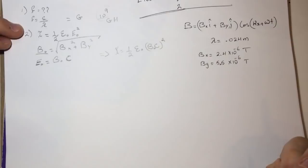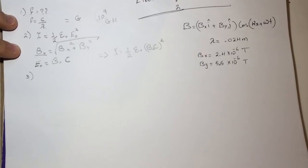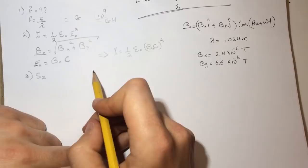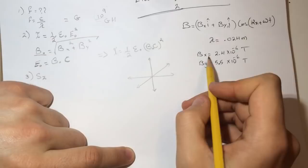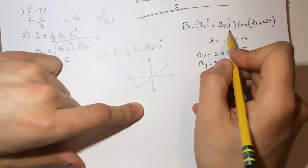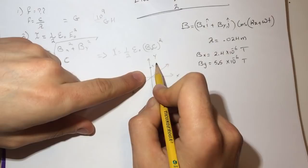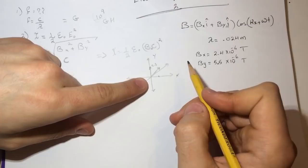So the intensity will look like this: I equals half epsilon-naught times B-naught times c, times c squared. Now question three is asking what is Sz, the z-component of the Poynting vector. The magnetic field is going in the i and j directions. Let's call this y, this is x, this is z — so in the y-direction it's 5.5 and in the x-direction it's 2.4.